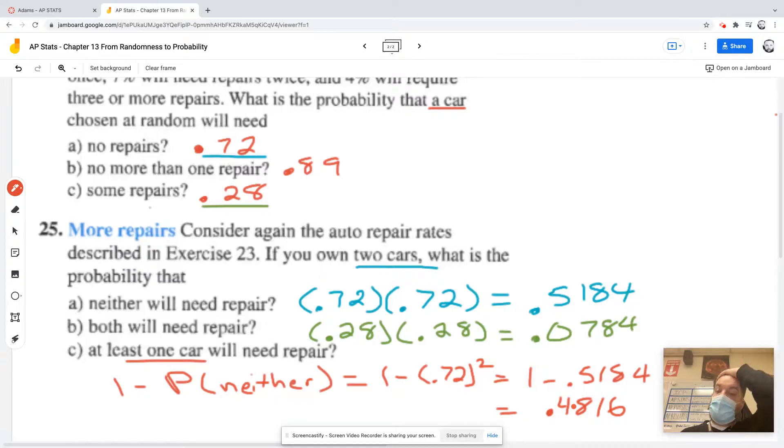So the complements there make that a heck of a lot easier. Because what I'd have to do is say, well, what's the probability of one of them needing to be repaired? And I'd calculate that. What's the probability of both of them being repaired? I'd calculate that. And then I'd have to add those up. It'd equal 0.48.